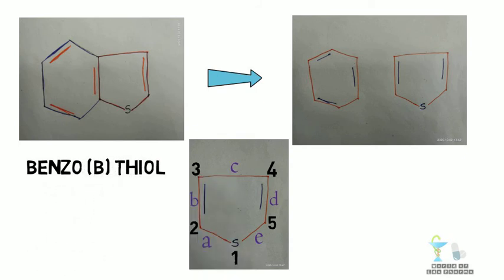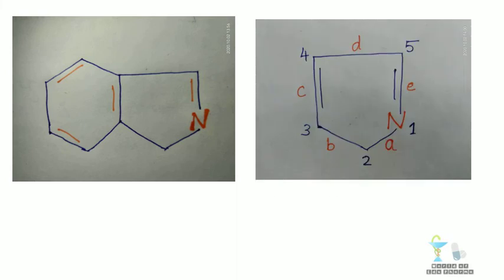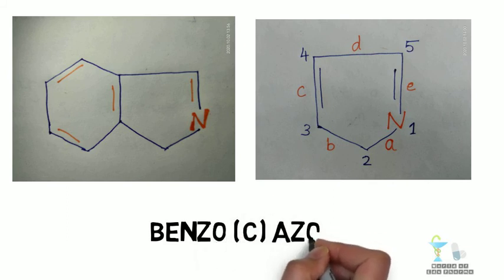Another example. The same thing is here - breaking and numbering 1, 2, 3, 4 and 5, and now giving alphabets A, B, C, D and E. Benzo, C, azole.